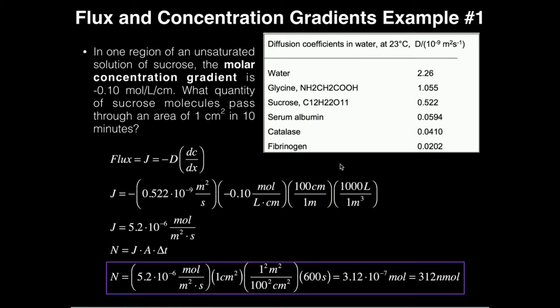So for sucrose, the diffusion coefficient is 0.522 times 10 to the minus ninth meters squared per second. So I'm going to plug that in. j our flux is negative 0.522 times 10 to the minus ninth meters squared per second times the concentration gradient, which is negative 0.1 moles per liter per centimeter.